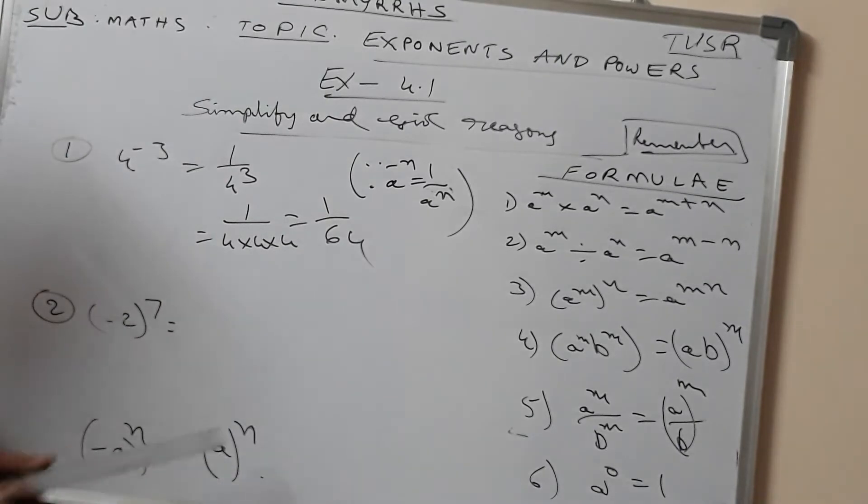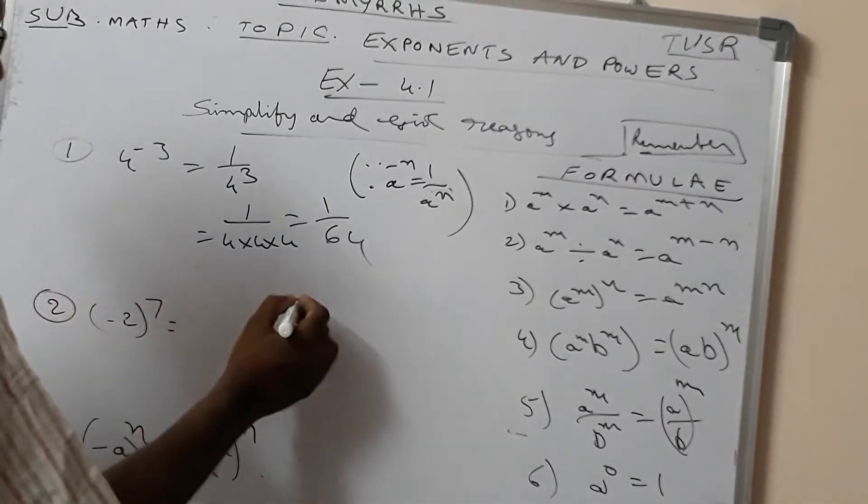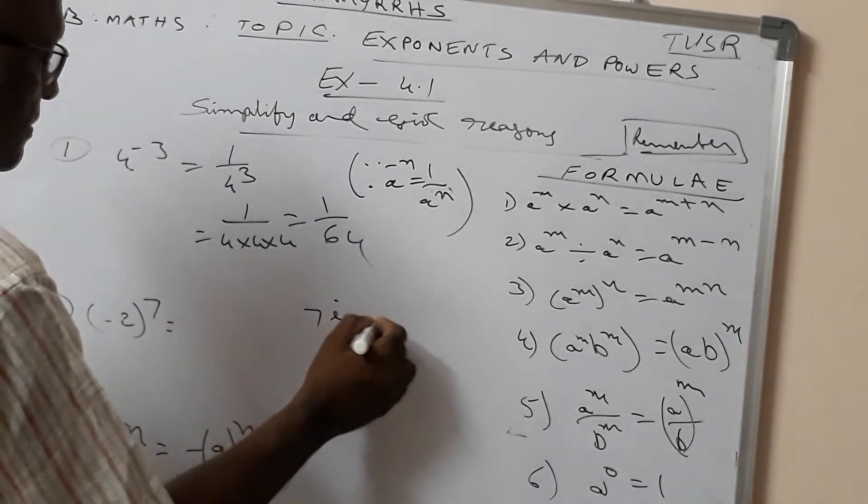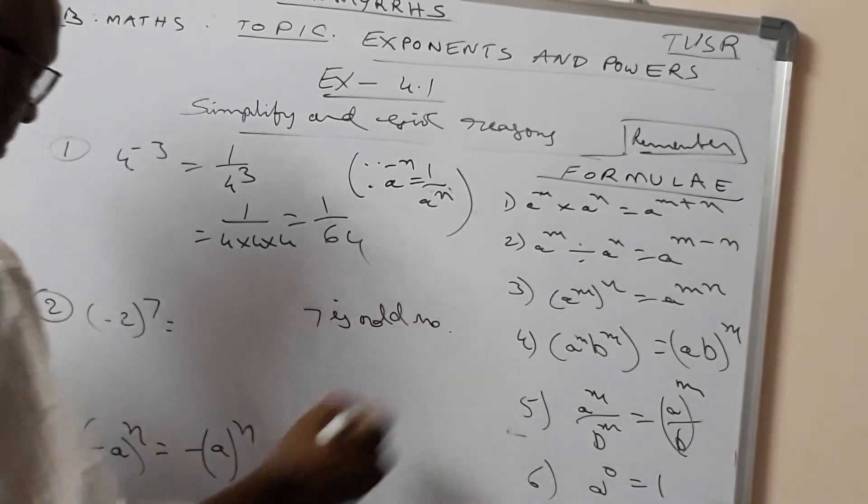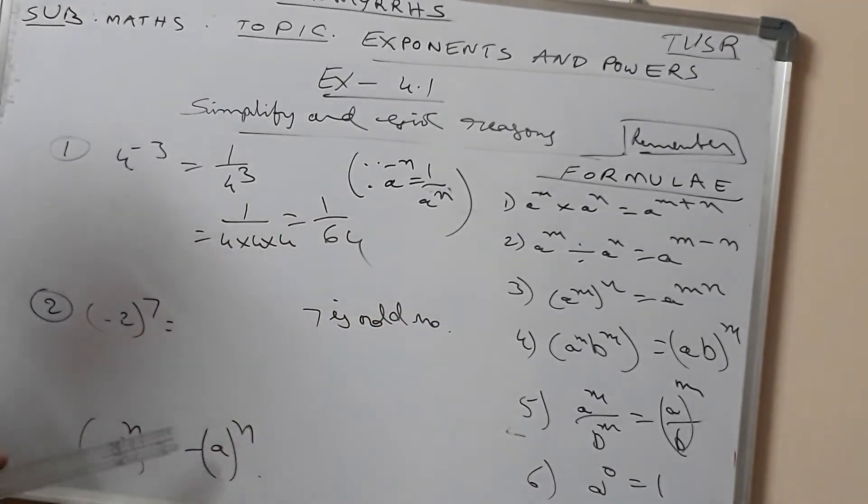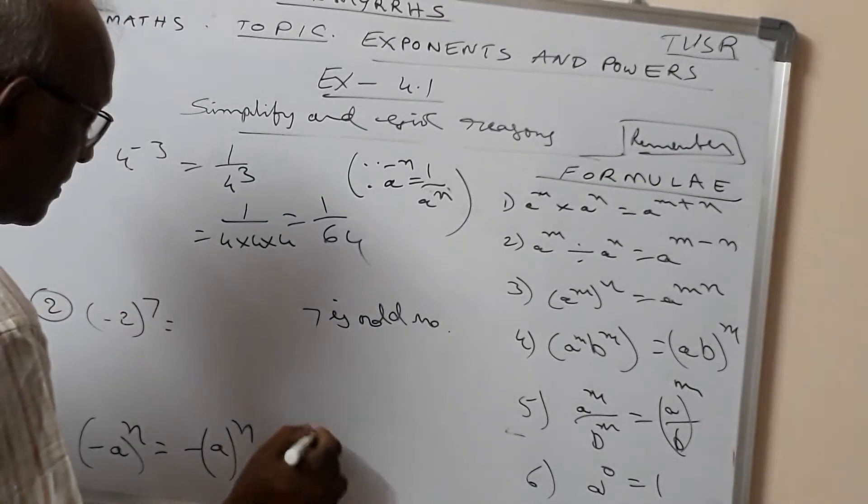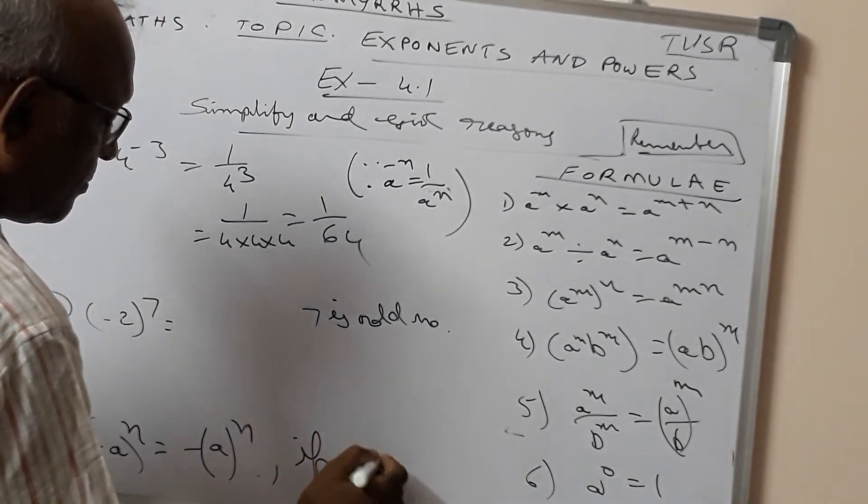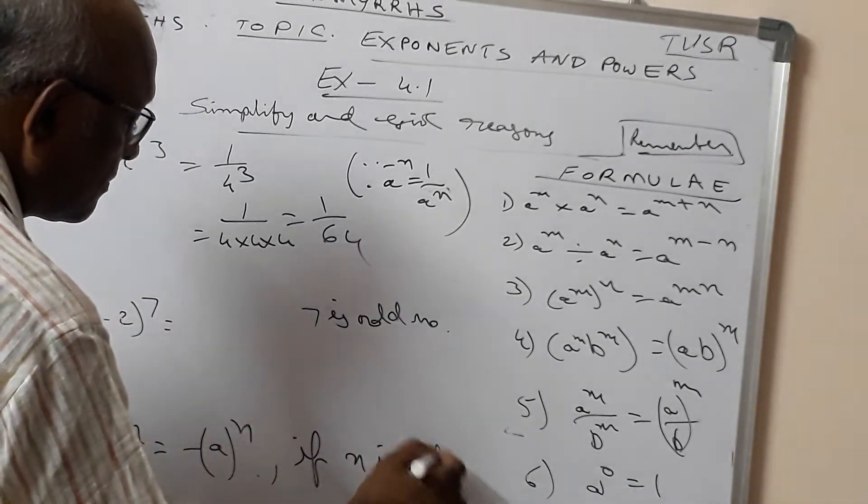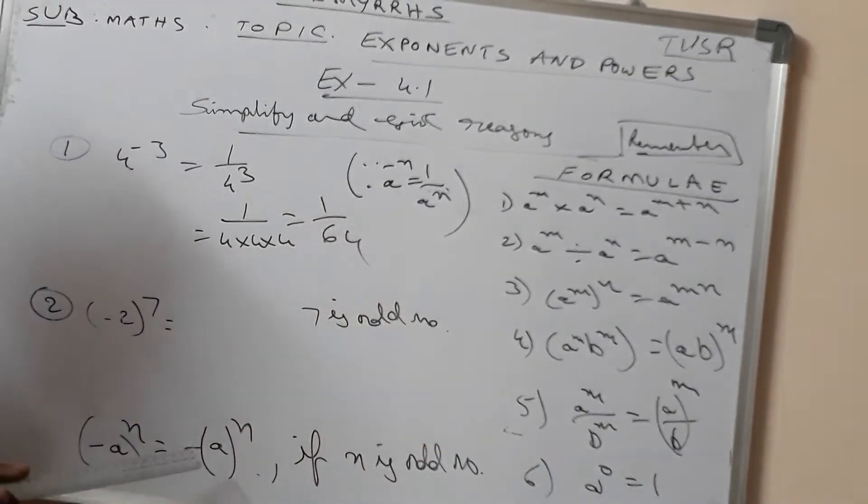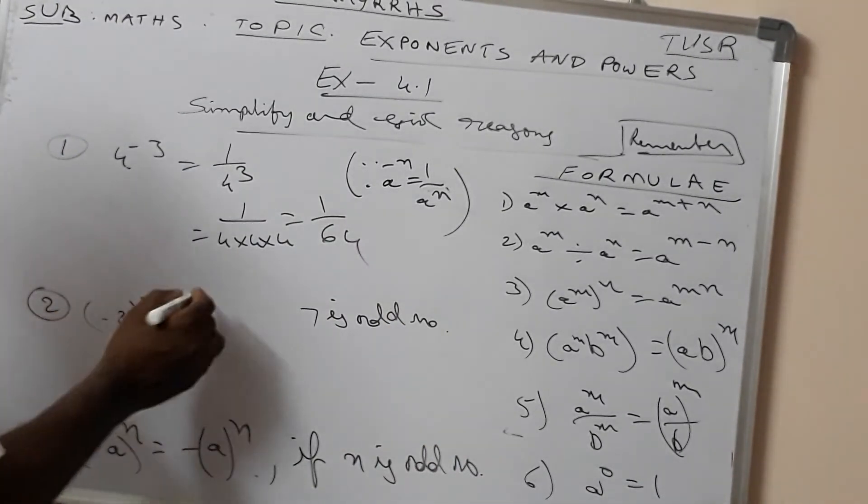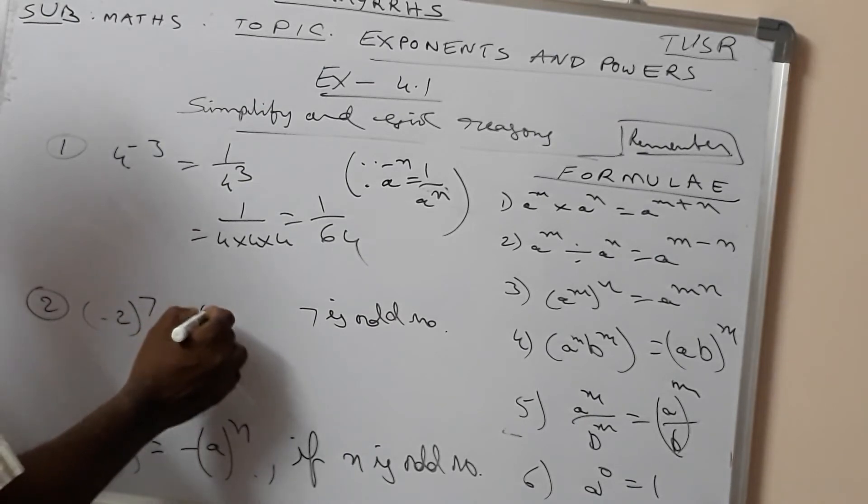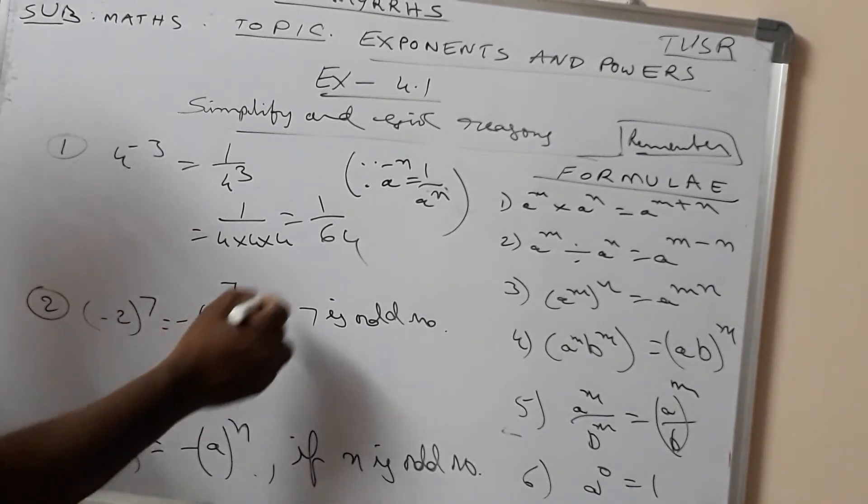Minus e to the power of n. This 7 is an odd number. If n is an odd number, then minus 2 to the power of 7 is equal to minus times 2 to the power of 7.